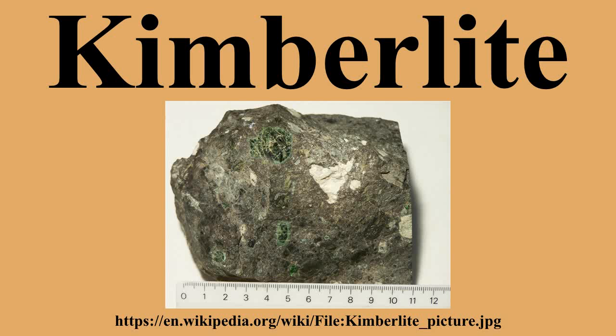The diameter of a kimberlite pipe at the surface is typically a few hundred meters to a kilometer. Two Jurassic kimberlite dikes exist in Pennsylvania. One, the Gatesadar dike, outcrops on the Monongahela River on the border of Fayette and Greene Counties. The other, the Dixonville-Tanoma dike in central Indiana County, does not outcrop at the surface and was discovered by miners.